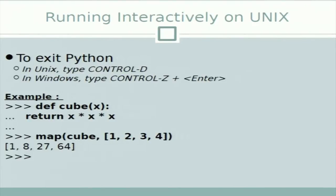So if we pass the list [1, 2, 3, 4], the map function will return the cube of each element: 1, 8, 27, 64.